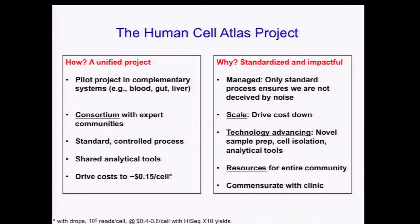We want to do it with a standardized, controlled process and by developing and deploying shared analytical tools. And we could set ourselves the realistic goal of driving the cost per cell to about 15 cents. This is already quite realistic with the ability to use droplets and the yield of a high-throughput 10X sequencing approach. If sequencing costs drop even further, this number can go substantially lower.